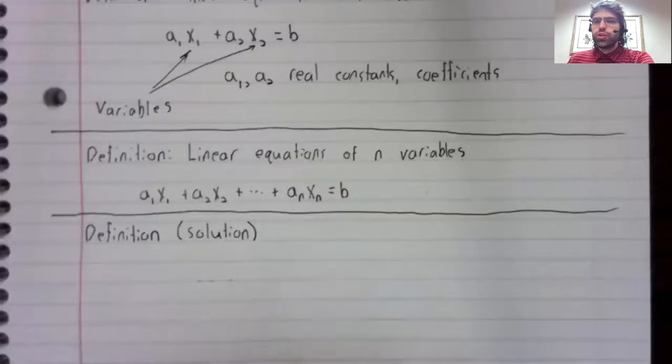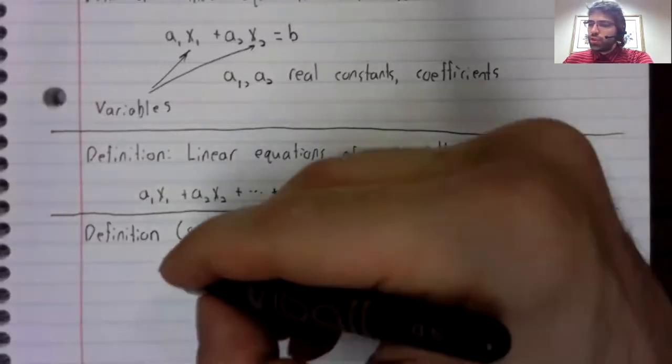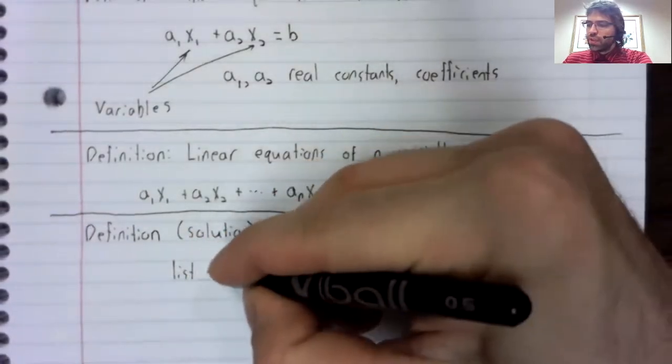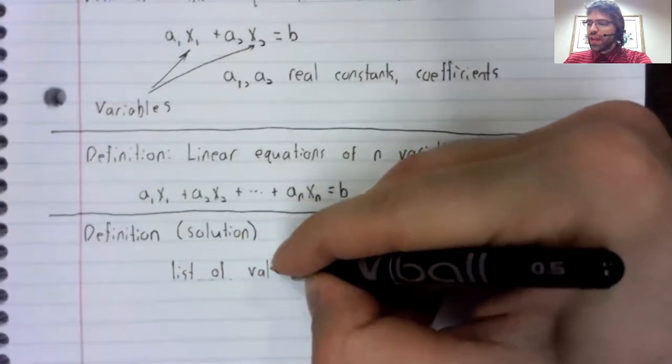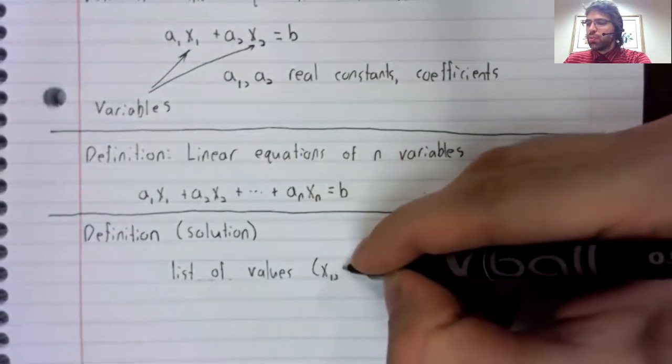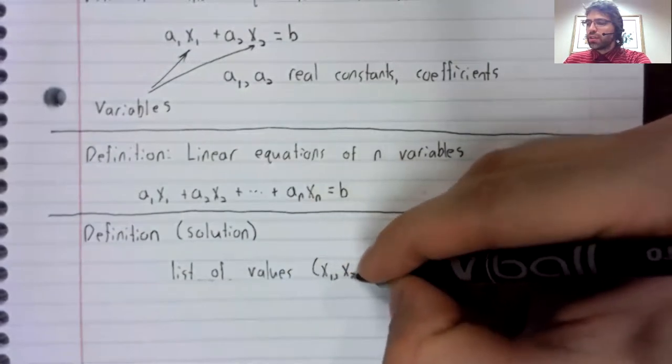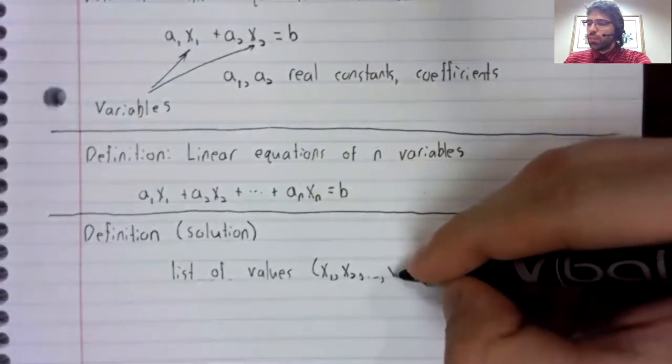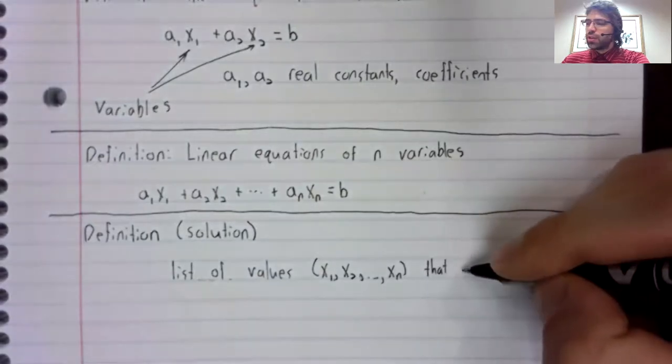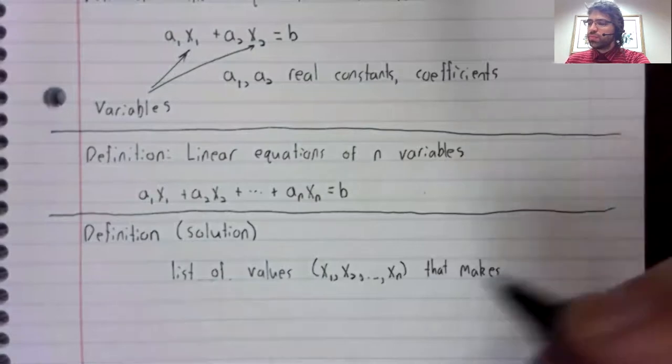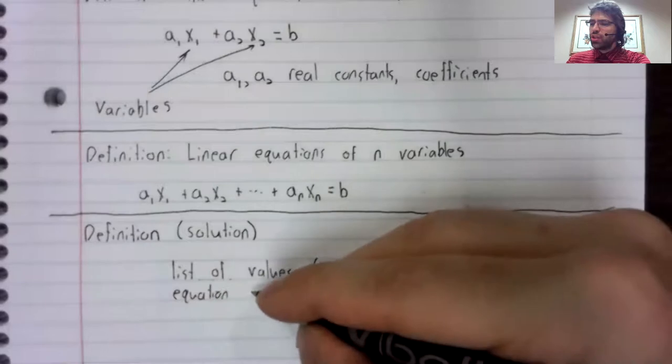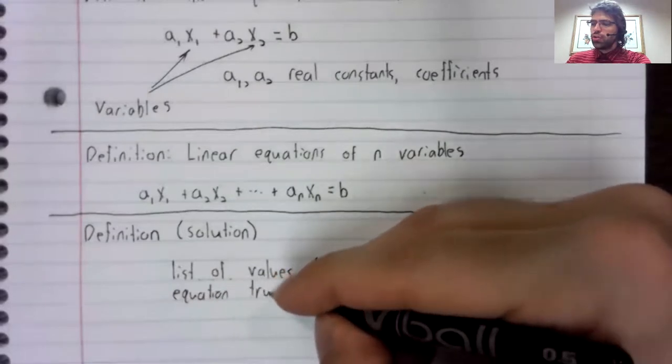A solution to a linear equation is a list of values for x sub one, x sub two, up to x sub n that makes the equation true.